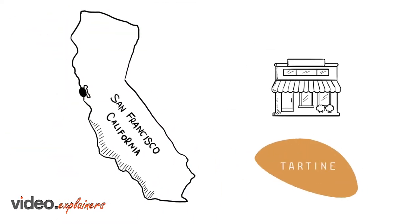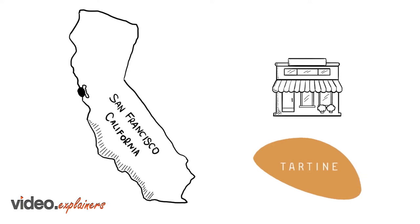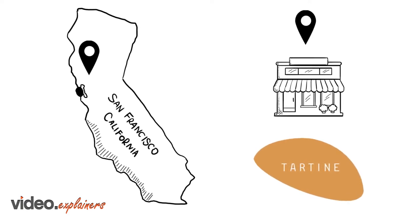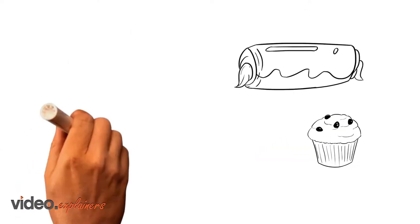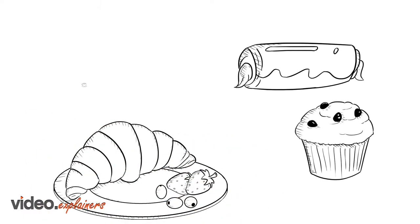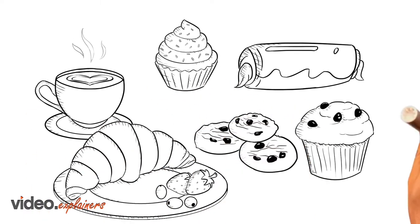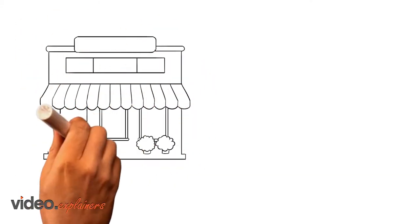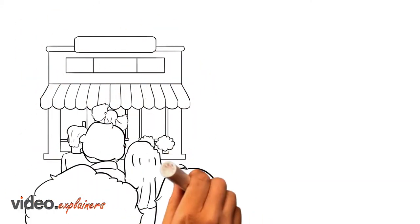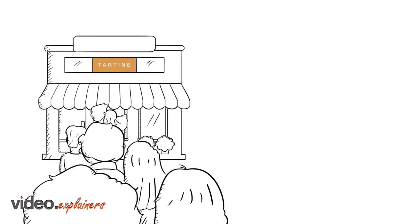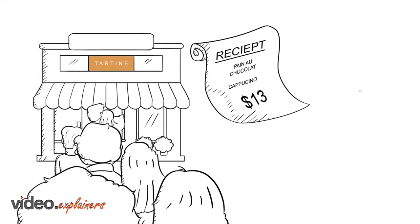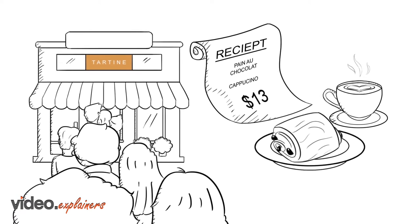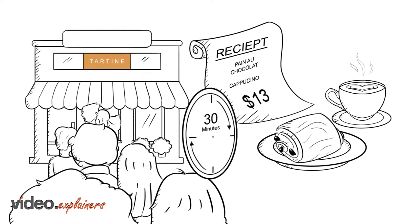It reminds us of a famous bakery in San Francisco called Tartine. If you don't know Tartine, you should definitely put it on your list. This bakery has a well-deserved reputation for offering delicious products of exceptional quality. On just about any morning, if you drive by Tartine, you will see a line around the block with folks waiting to pay upwards of $12 to $13 for a small cappuccino and a pain au chocolat after waiting in line for 30 minutes.